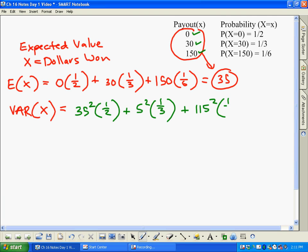So once again this number right here in front comes from the difference between the payout and the average that you calculate first. So 35 minus 0 is 35, 35 minus 30 is 5...